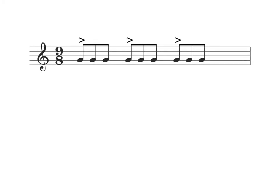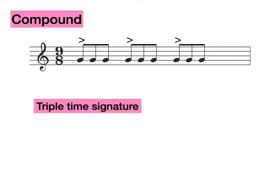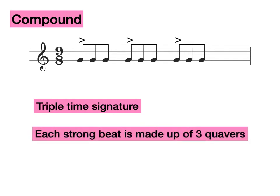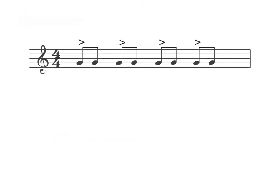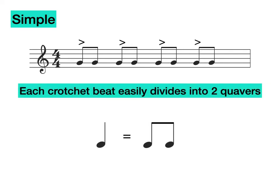What about 9/8? Is this simple or compound? That's correct, this is compound. We know it's a triple time signature because of the three strong beats, and each strong beat is made up of three quavers, making it a compound time signature. What about 4/4? That's correct, it is a simple time signature, because each crotchet beat can easily divide into two quavers.